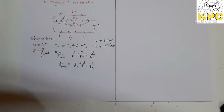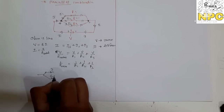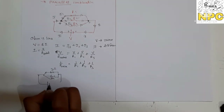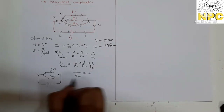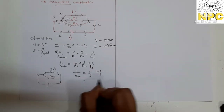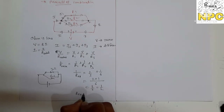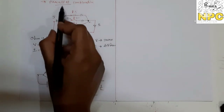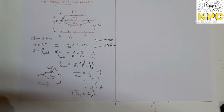The equivalent resistance in parallel combination is always the lowest — even lower than the smallest individual resistance. For example, if R1 = 3 ohm and R2 = 6 ohm in parallel: 1/R_eq = 1/3 + 1/6 = 2/6 + 1/6 = 3/6 = 1/2, so R_eq = 2 ohm, which is less than 3 ohm (the smallest).